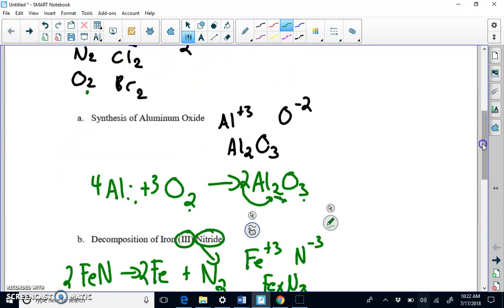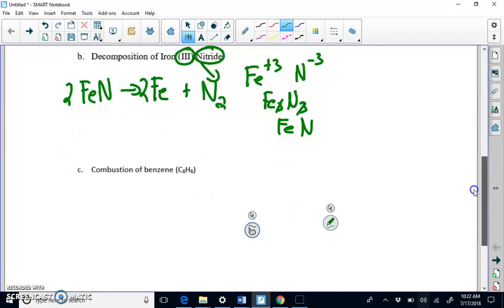The last reaction that we're going to look at here is a combustion reaction. And you have to remember that for combustion reactions, you always take the thing you're combusting, in this case the benzene, you're reacting it with oxygen, and you're always producing carbon dioxide and water. That reaction never changes. The only thing that changes is what goes here. That's what always happens in a combustion reaction.